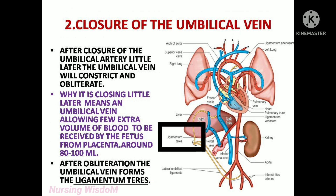The second change is closure of the umbilical vein. After closure of the umbilical artery, a little later the umbilical vein will constrict and obliterate. It closes a little later because the umbilical vein allows a few extra volume of blood — around 80 to 100 ml — to be received by the fetus from the placenta. After obliteration, the umbilical vein forms the ligamentum teres.